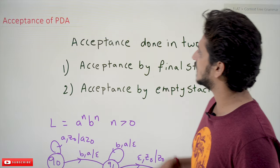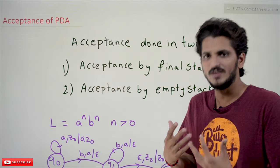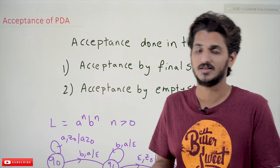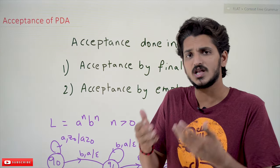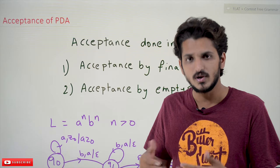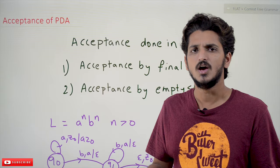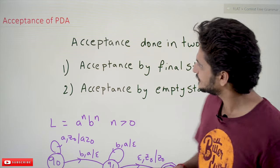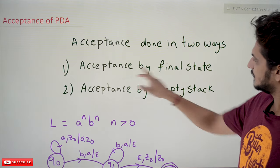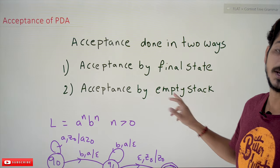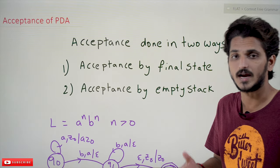Acceptance of a pushdown automata means: when are we going to accept the given string? In finite automata, when we are on the final state we accept the string; if not on the final state, we don't accept. Similarly, pushdown automata acceptance is done in two ways: acceptance by final state, or acceptance by empty stack.